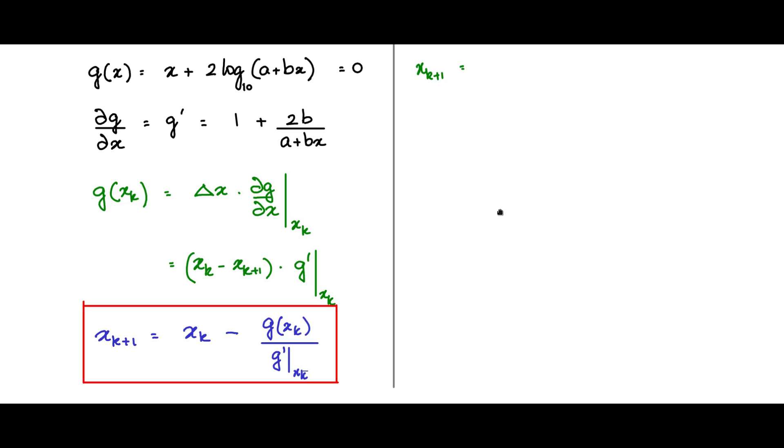x k plus 1 is equal to x k minus g, which is this part of the equation x k plus 2 log base 10 a plus b x k evaluated at x k, divided by g prime which is 1 plus 2 b by a plus b x k. This is the entire iterative equation.